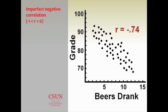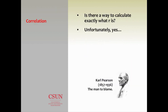This is the negative correlation example — the more beer you drink, going up to about 15 (maybe per week or per month), the worse your grade is. But again, not perfect. That's a negative correlation between zero and negative one.